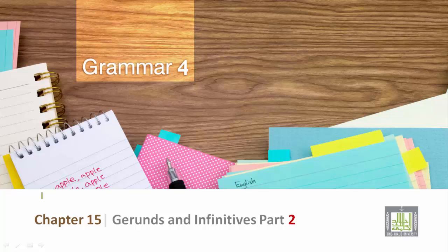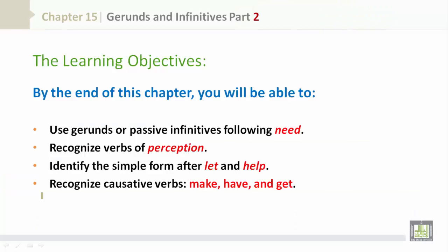Grammar 4, Chapter 15, Gerunds and Infinitives Part 2. The Learning Objectives: By the end of this chapter, you will be able to use gerunds or passive infinitives following need, recognize verbs of perception, identify the simple form after let and help, and recognize causative verbs such as make, have, and get.